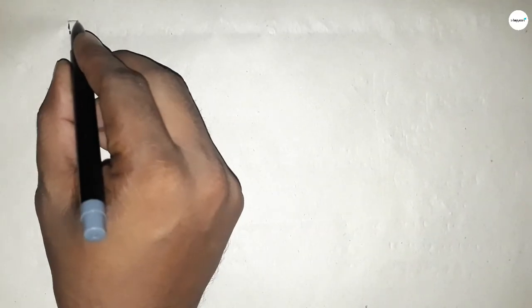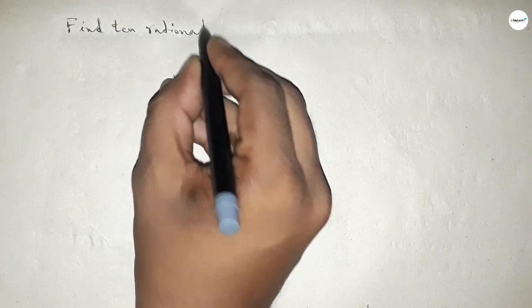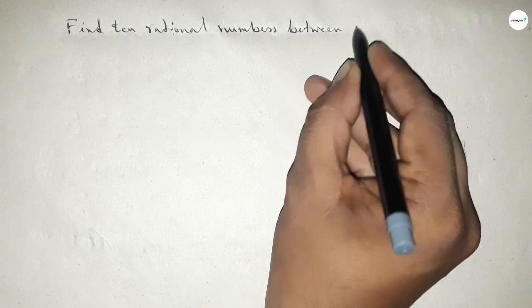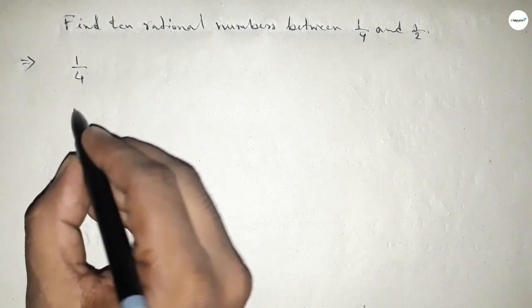Hi everyone, welcome to SSR classes. Today in this video we have to find 10 rational numbers between 1/4 and 1/2. So let's start the video. First of all, write down here the given numbers: 1/4 and 1/2.